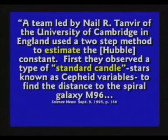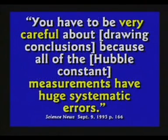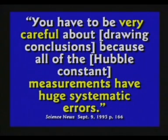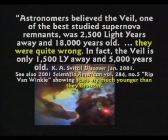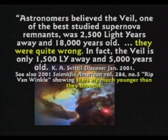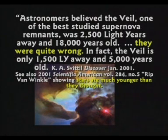First they observed Cepheid variable stars as a standard candle to find the distance to spiral galaxy M96. You have to be very careful about drawing conclusions because of the Hubble constant — measurements have huge systematic errors. Astronomers believed the Veil Nebula, one of the best-studied supernova remnants, was 2,500 light years away and 18,000 years old. They were quite wrong — in fact the Veil is only 1,500 light years away and 5,000 years old, from Discover magazine, January 2001.